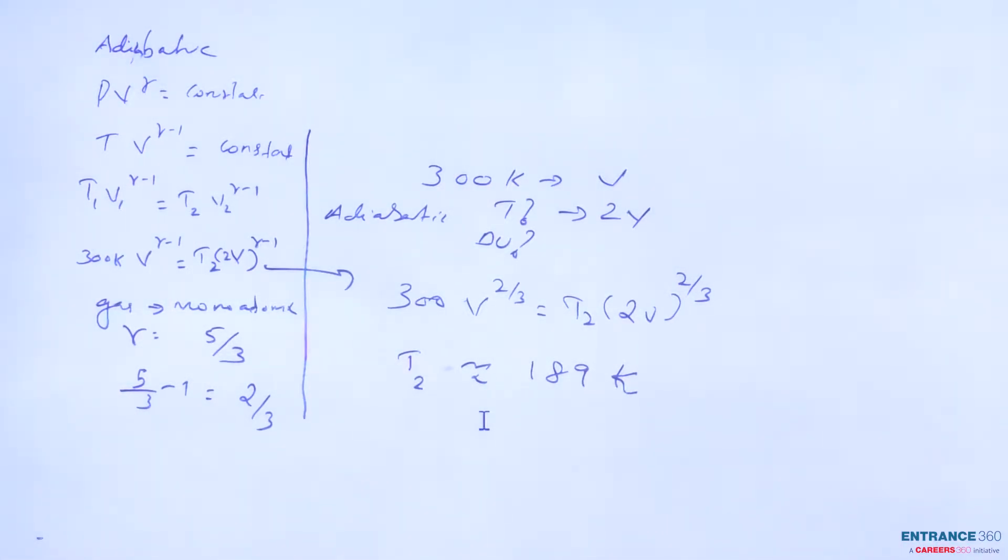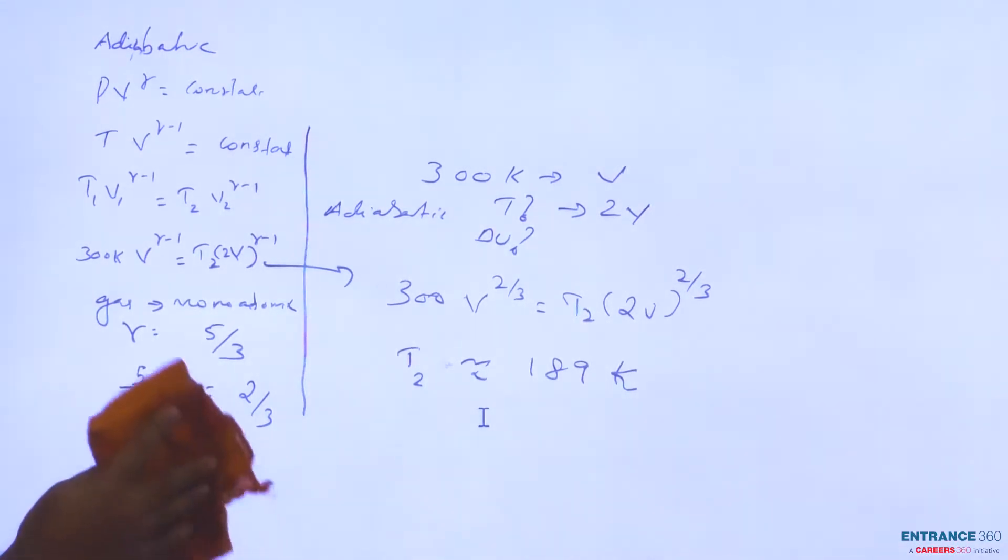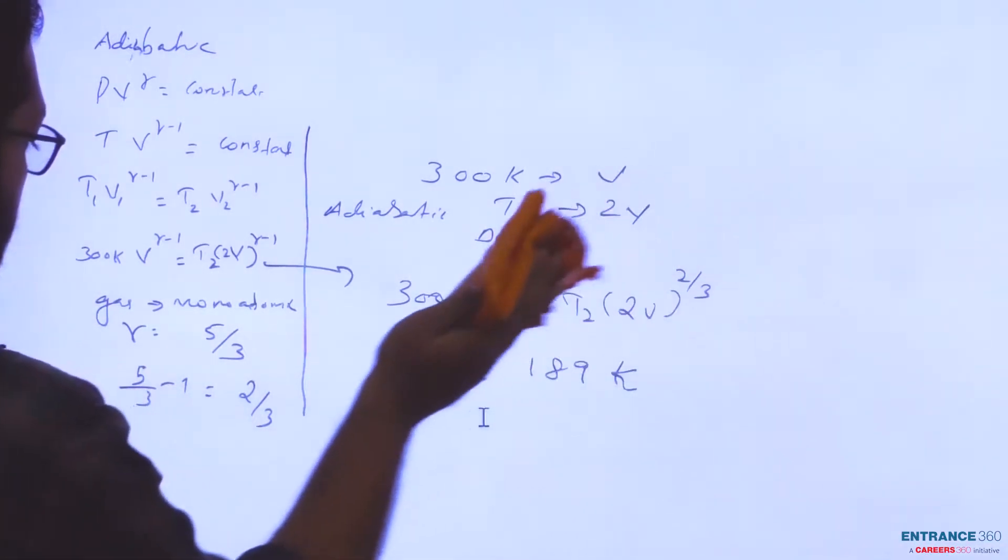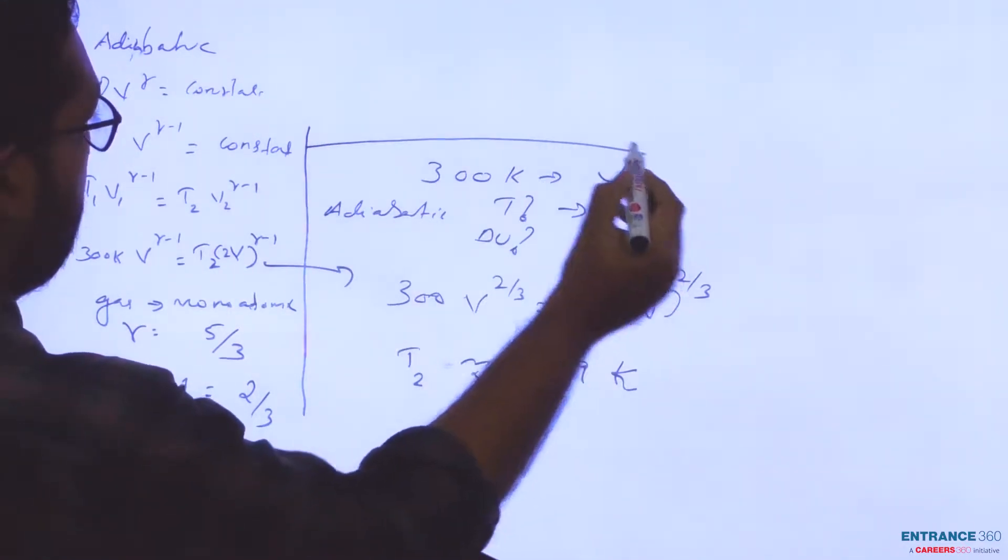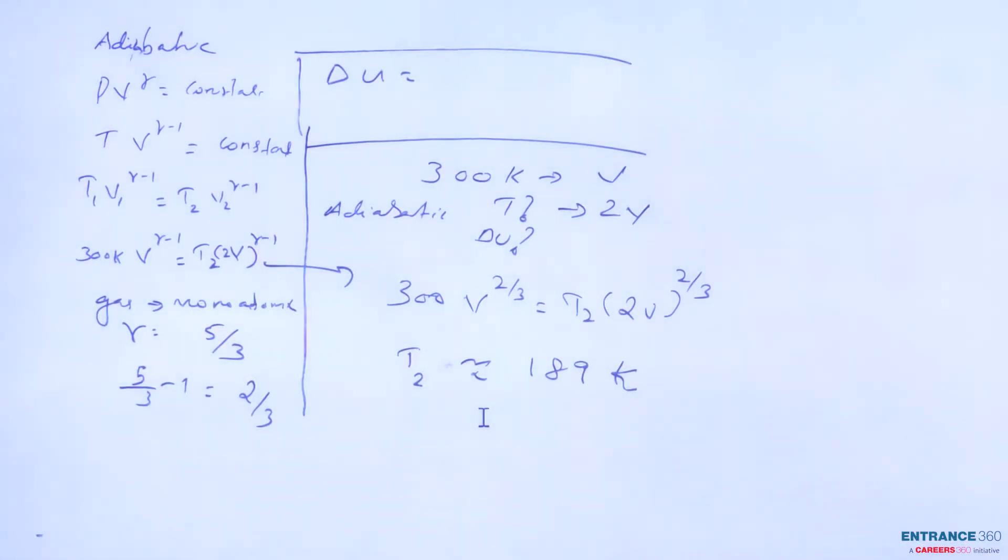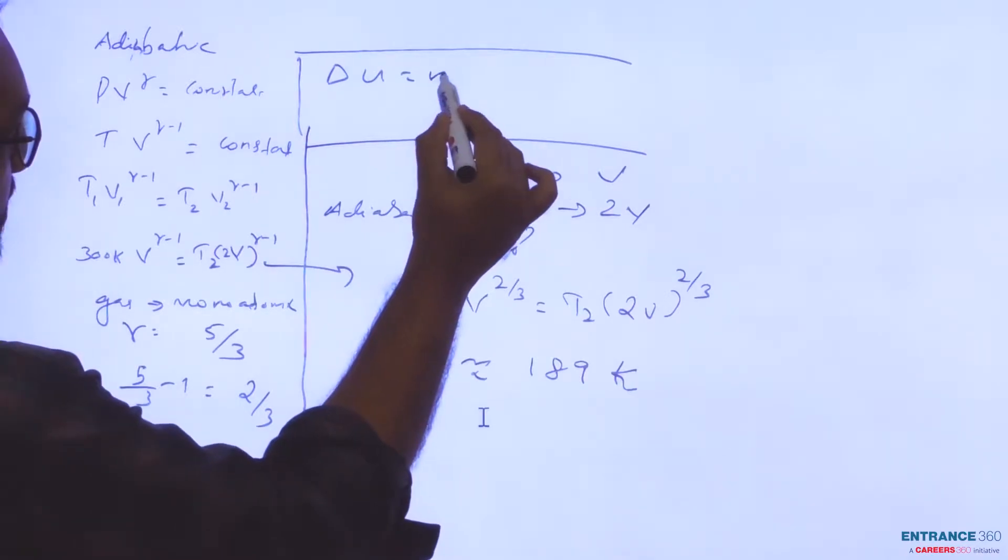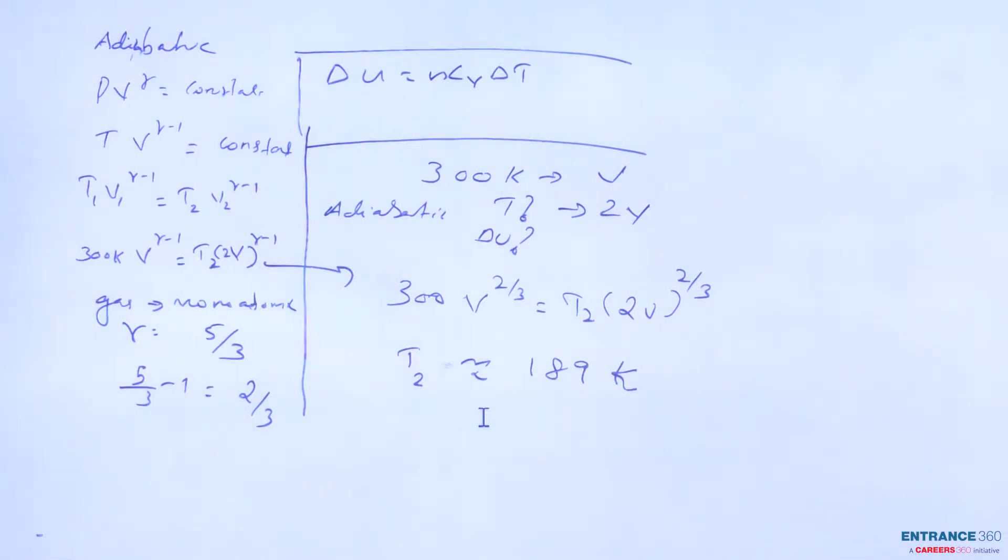Now we have to find out the internal energy ΔU. To find the internal energy, ΔU = nCvΔT, which we can write as n×F/2×R×ΔT, where F is degrees of freedom.